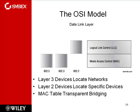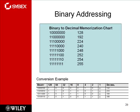The OSI model: layer 3 devices locate networks, layer 2 devices locate specific devices. The MAC table — transparent bridging — means when something goes into the switch it automatically goes out the correct port based on MAC address. The switch learns MAC addresses as they come in. If it doesn't know where a MAC address is, it floods out all ports. When the device answers, the switch records the port number for that MAC address in its table. These entries time out — if they lasted forever, you could never move a computer. You can configure manual MAC addresses or automatic detection.